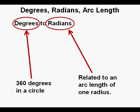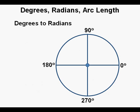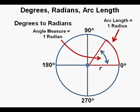Here's a circle separated into quadrants with degree markings: 90, 180, 270, and 360 degrees. The radius is marked as a red line segment. If we take this length of the radius and bend it into the shape of an arc, this arc — equal in length to a radius — forms an angle from zero degrees. The measure of that angle is one radian.